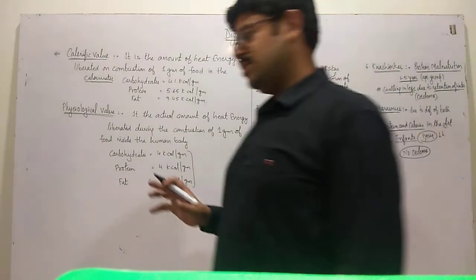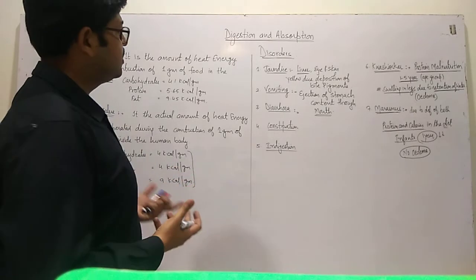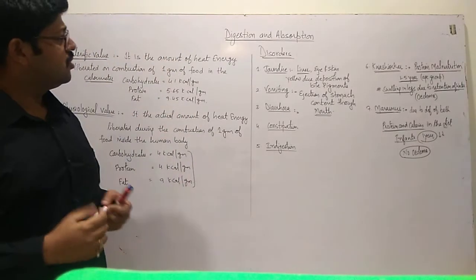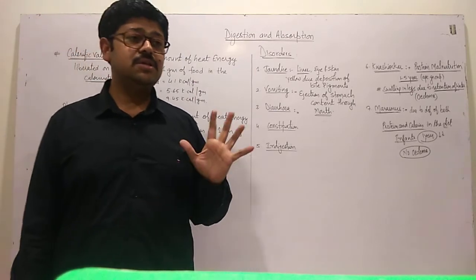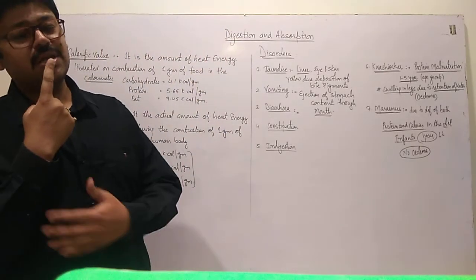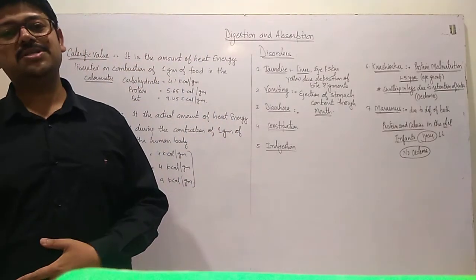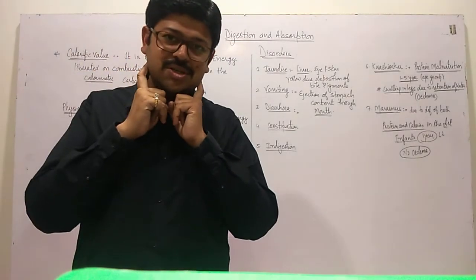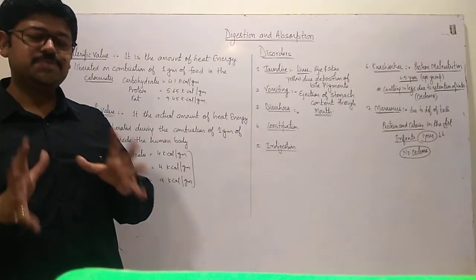So this is our chapter of Digestion and Absorption. We started with Buccal Cavity, Pharynx, Esophagus, Small Intestine, Large Intestine, and then digestive glands including salivary glands, gastric glands, liver, pancreas, and intestinal glands.